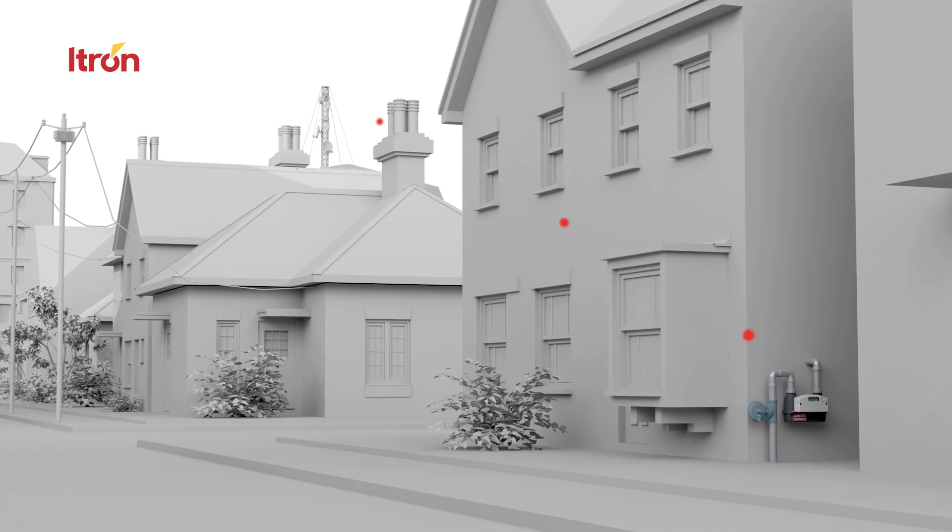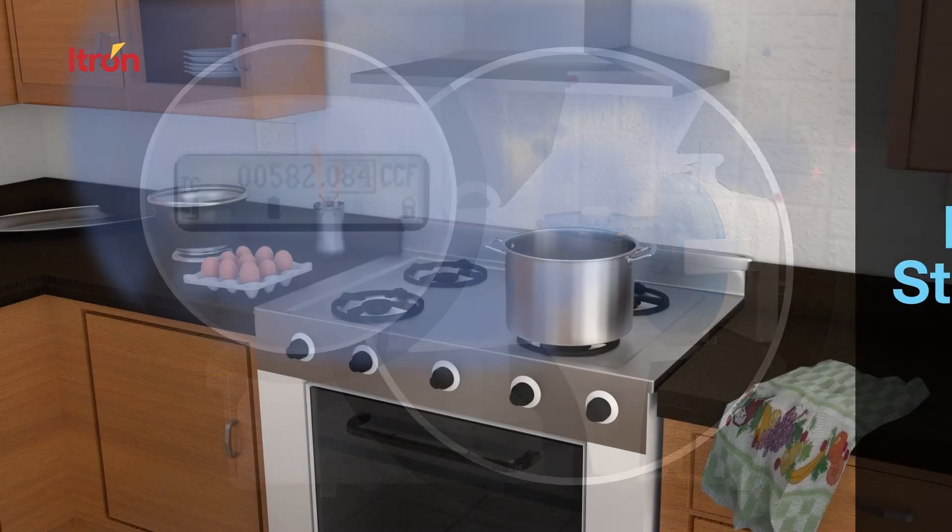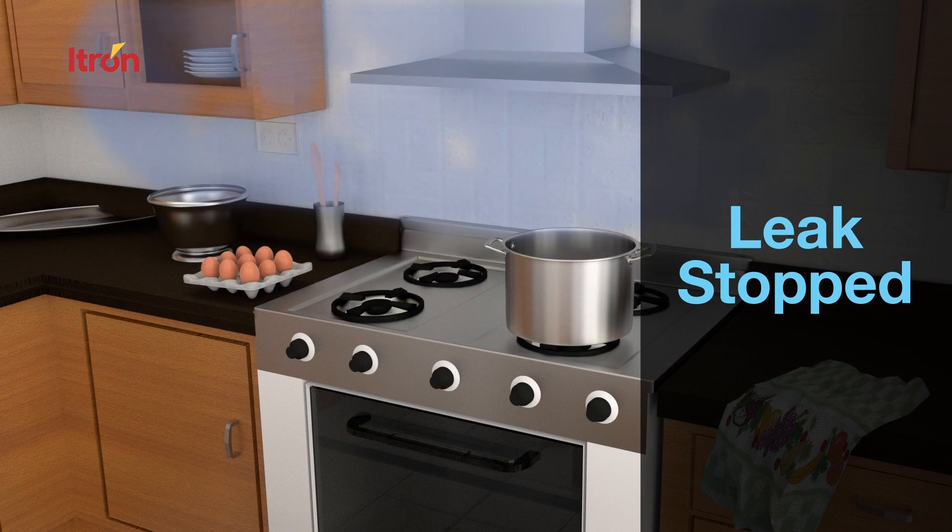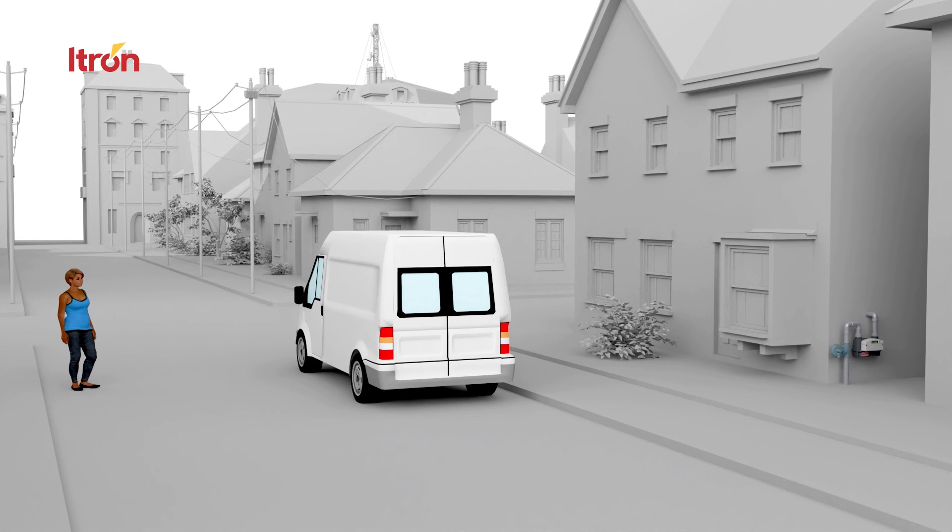The utility should follow their standard operating procedure, such as dispatching a technician to the site to perform an inspection. Knowing that the gas flow has already been shut off creates a safer situation for utility workers, homeowners, and the community at large.